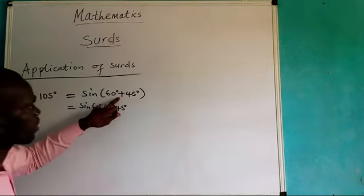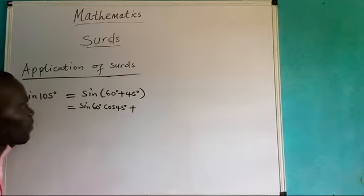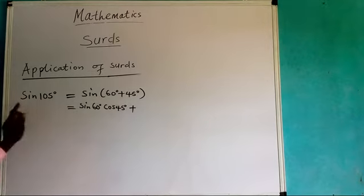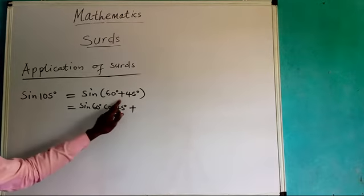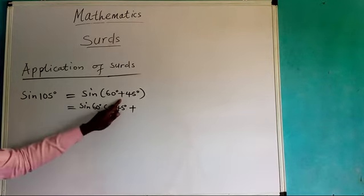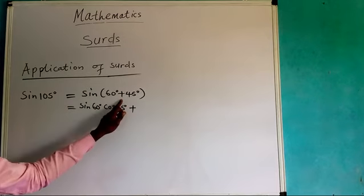For sine, this addition will remain the same for sine. If here was minus, it means here will still remain minus for sine. But for cosine, this addition becomes minus. Like for cosine, if there is an addition, it will become minus.